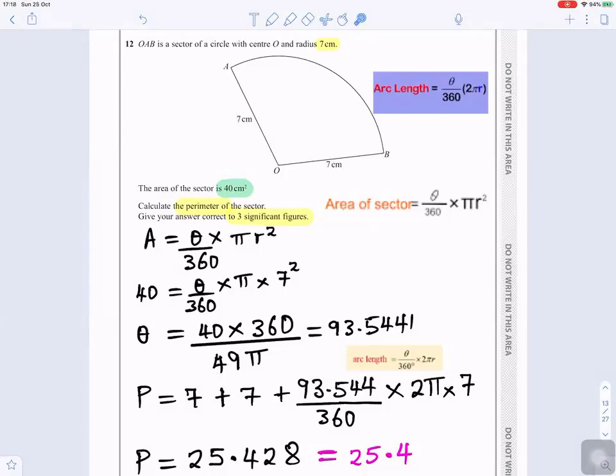Perimeter is the distance around the shape of the object. So you start from O, you go to A, you go around A to B, B to O, you come back. So what we want to do, we add O to A, which is 7, plus O to B, which is another 7.